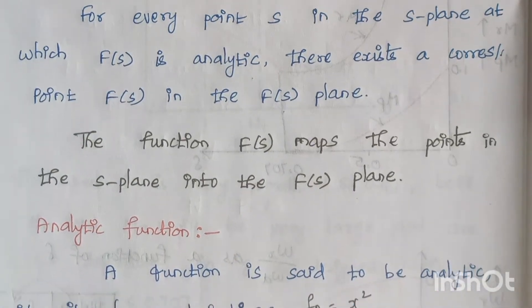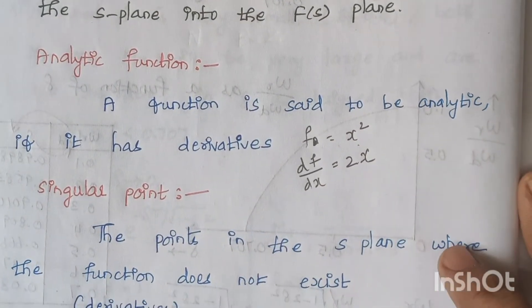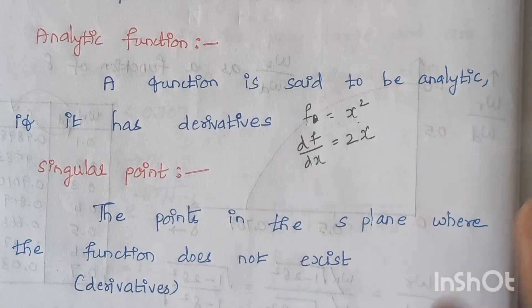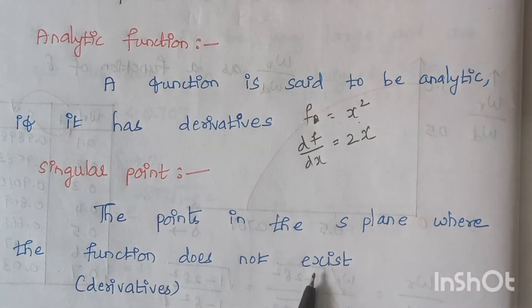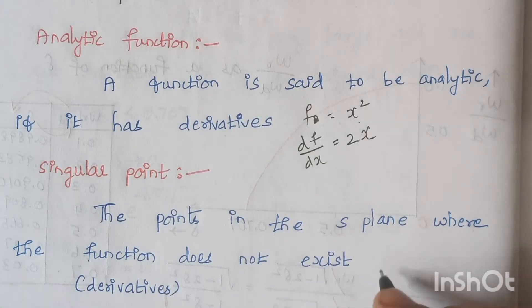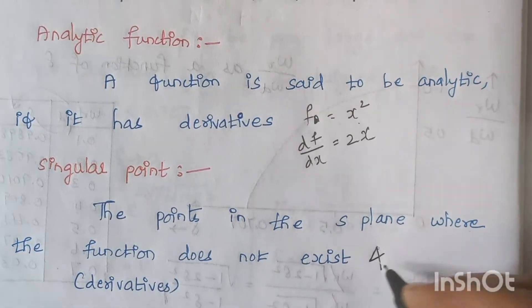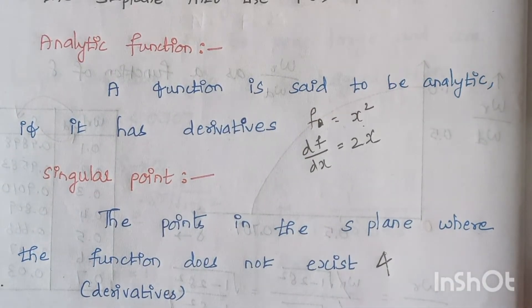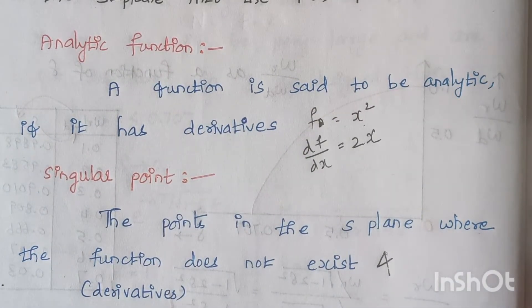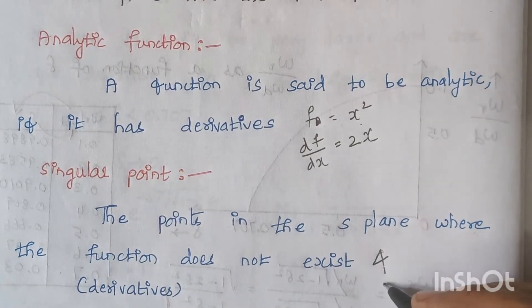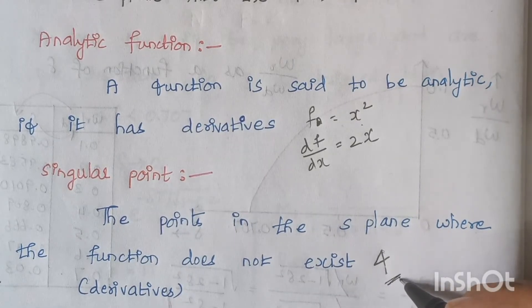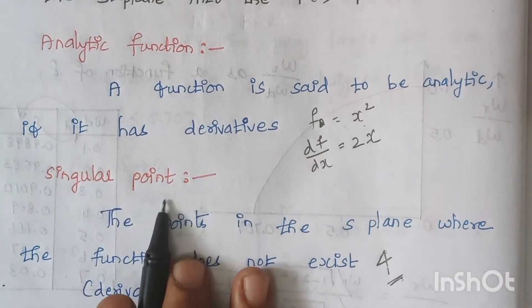The next term is singular point. A singular point is a point in the s plane where the function does not exist — that is, the function cannot be differentiated. For example, if you have a constant and you differentiate it, the answer is zero. We don't want zero here, so this type of value is said to be a singular point.